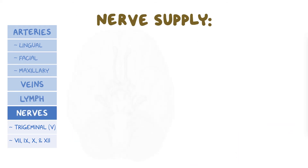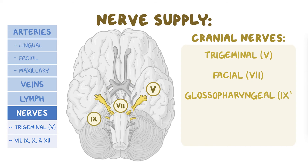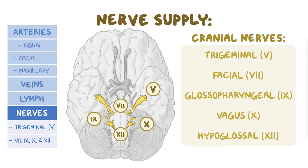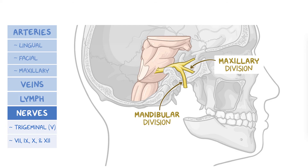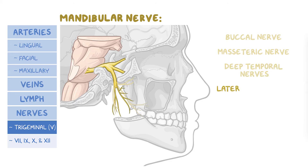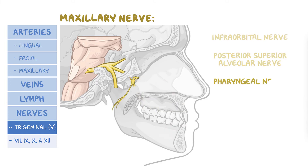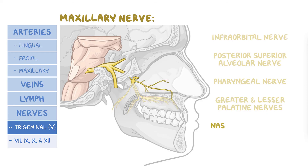Now the oral cavity's nerve supply is derived from a bunch of cranial nerves, namely the trigeminal nerve, facial nerve, glossopharyngeal nerve, vagus nerve, and the hypoglossal nerve. The maxillary and mandibular divisions of the trigeminal nerve supply most of the oral cavity. The mandibular nerve gives branches including the buccal nerve, the masseteric nerve, deep temporal nerves, lateral pterygoid nerve, lingual nerve, and the inferior alveolar nerve, whereas the maxillary nerve gives off the infraorbital nerve, posterior superior alveolar nerve, pharyngeal nerve, greater and lesser palatine nerves, and the nasopalatine nerve.